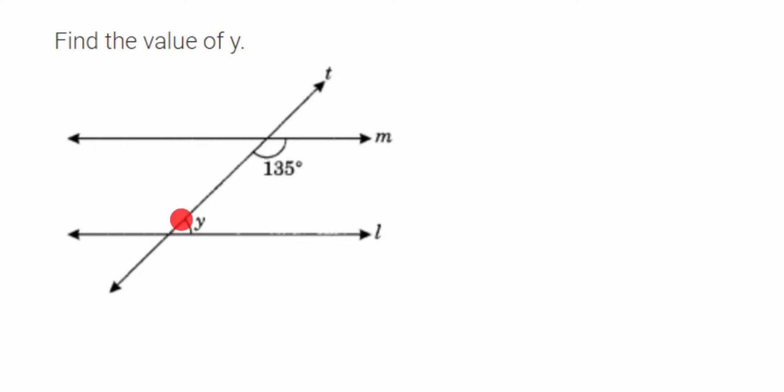Here M and L are parallel, and these two values or angles are lying on one side of the transversal and they are in the interior part of it. These are inside the parallel lines. So we have one property that the sum of the interior angles lying on one side of a transversal...